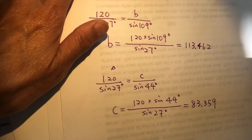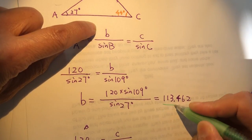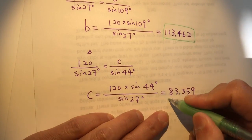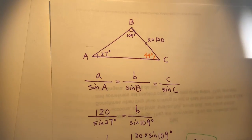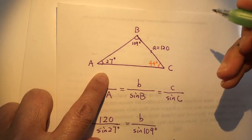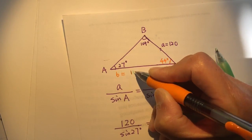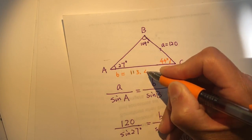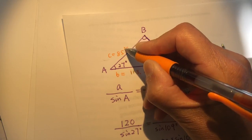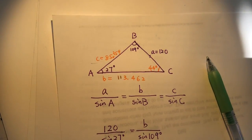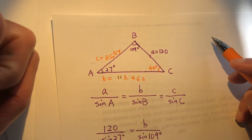So we figured out side a, which was given, then calculated side b and side c. We now know all three angles — A, B, and C — and all three sides — a, b, and c. So we've solved this triangle. And from here we can go ahead and figure out the area, the perimeter — everything naturally comes out.